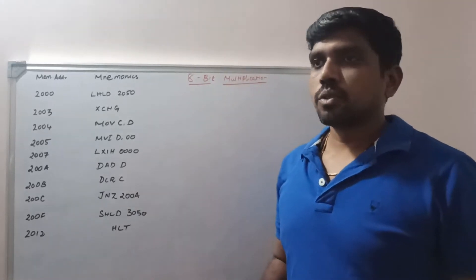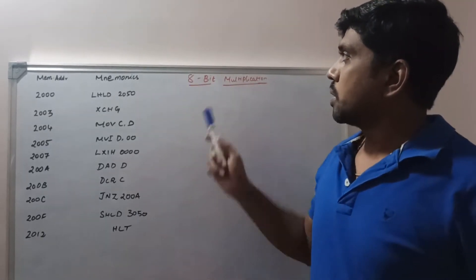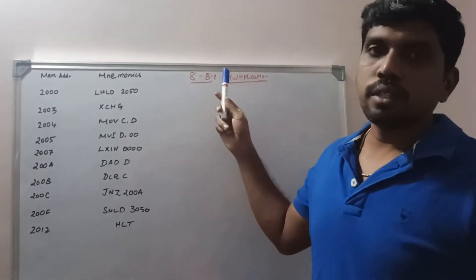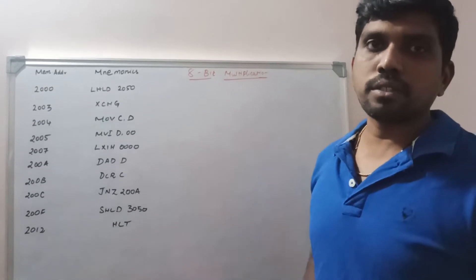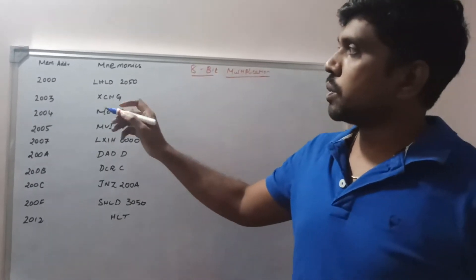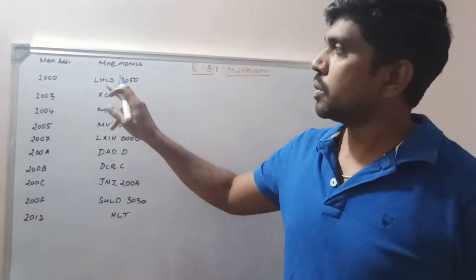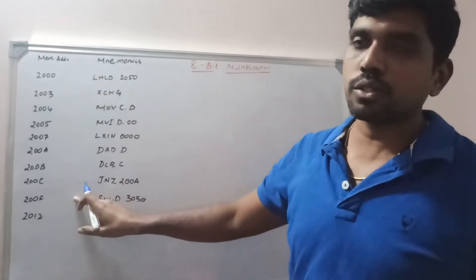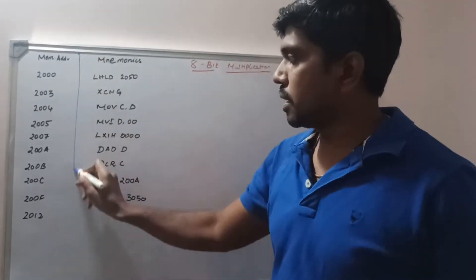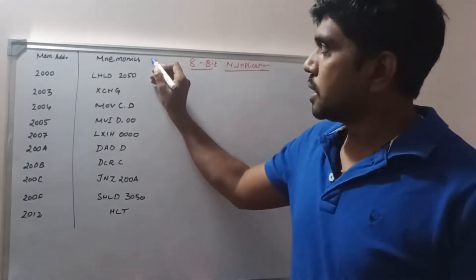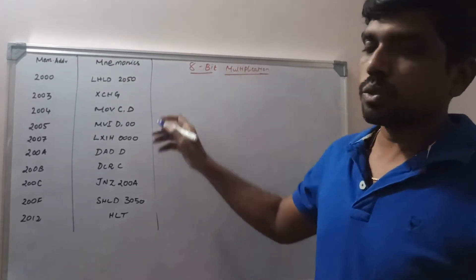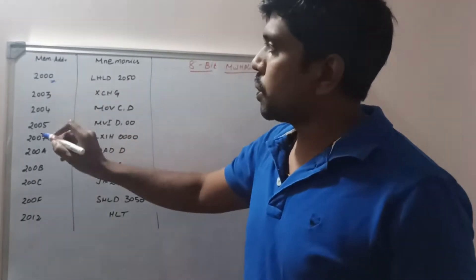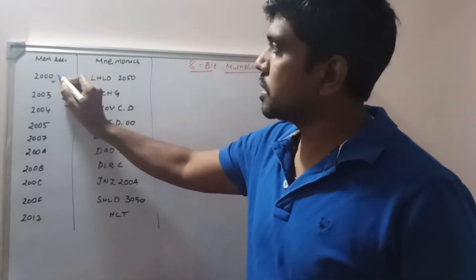Welcome to our channel. Today's session we are going to discuss about 8-bit multiplication function. In the last video I already covered 8-bit addition and subtraction. While writing the program you can split into columns: the first column is the program counter address location, and the second column is the mnemonics. The first program counter address location is 2000H, which is the starting point or origin of the program.